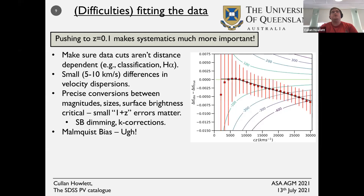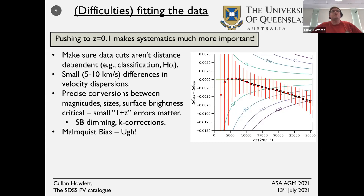Here's an example of what might happen if you neglect one of these things. This plot shows mocks where I neglected K-corrections when doing the Malmquist bias correction — a subtle mistake that's easy to make. The result is a bias in peculiar velocities where delta D, a proxy for peculiar velocity, increases with redshift. In a smaller sample at lower redshifts the offset might be around 100 km/s, within the expected cosmic variance. But once you go out to redshift 0.1, these small systematics can become enormous spurious outflows or inflows in your data.